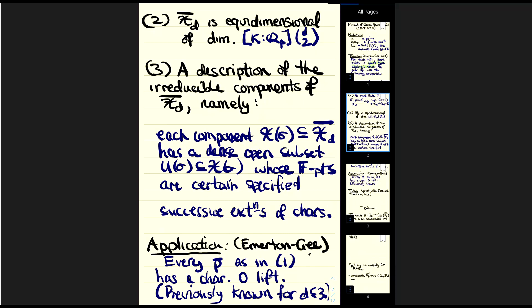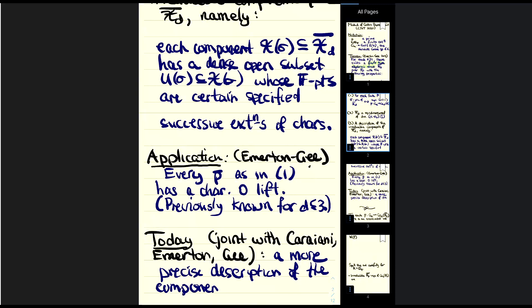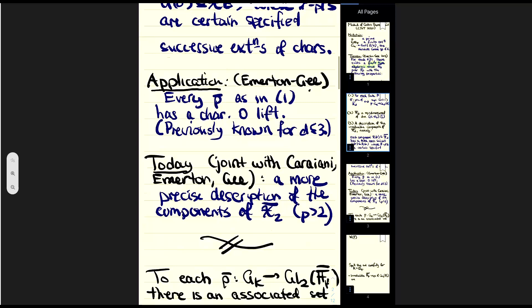What I want to discuss today, which is joint work with Emerton and Gee as well as Ana Caraiani, is a more precise description of these irreducible components in the two-dimensional case. Our result requires p at least 2.